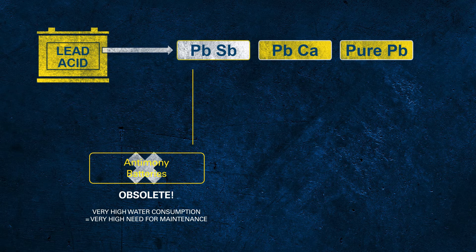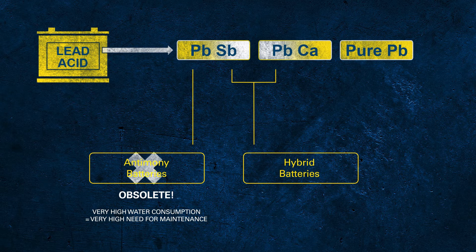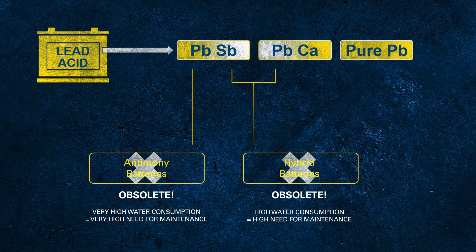The next step in development was the so-called hybrid batteries. In this case, hybrid indicates that one grid was still made of PBSB but the other one was made of lead calcium alloy. Even these batteries had lower water loss compared to antimony batteries, but they still demand regular checks of electrolyte and to be topped up regularly with distilled water.